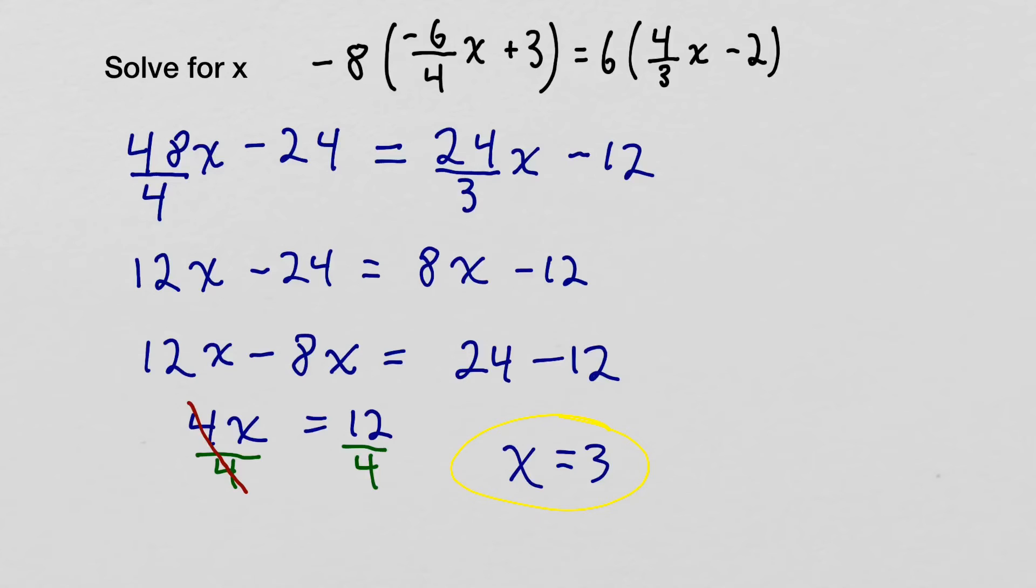So let's just recap what we did. First, we took this negative 8, and we multiplied it into both pieces. So 8 times 6 was our 48. We kept our denominator. Negative 8 times 3 gave us negative 24. And we did the same thing with our 6. 6 and 4 is 24. And 6 times negative 2 is negative 12. Then we simplified it. We divided these numbers up to give us these. And then we combined like terms.